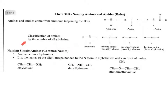When we classify amines, we can classify them by the number of alkyl chains — this classification also works with alcohols. Looking at primary versus secondary versus tertiary amines, we look at the nitrogen and determine how many carbon chains are coming off of it. One carbon chain off the nitrogen is a primary amine. Two carbon chains attached to the nitrogen makes it a secondary amine. Three carbon chains coming off the nitrogen makes it a tertiary amine.